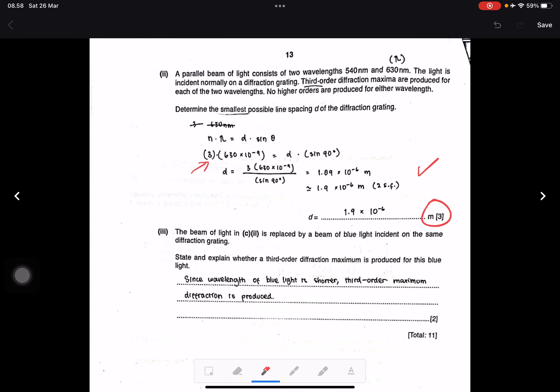Question iii: The beam of light is replaced by blue light incident on the same diffraction grating. State and explain whether a third-order diffraction maxima is produced from this blue light. Wavelength of blue light is shorter than 540 nanometers. Since the wavelength of blue light is shorter, diffraction is produced. It's good, yes correct.